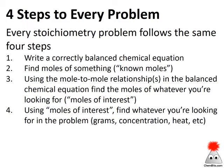Every stoichiometry problem has four steps. They're always the same steps, and they always work. First, write a correctly balanced chemical equation. Once you have that, look at the problem and find moles of something — those are the known moles. Once you're in moles, use the mole-to-mole relationships in the balanced equation to convert moles of what you know to moles of what you're looking for. Finally, convert those moles into whatever the problem asks for — whether that's grams, concentration, heat, or any number of other things.